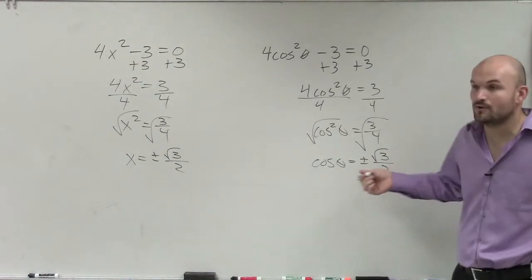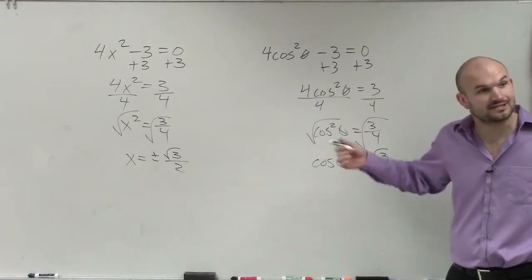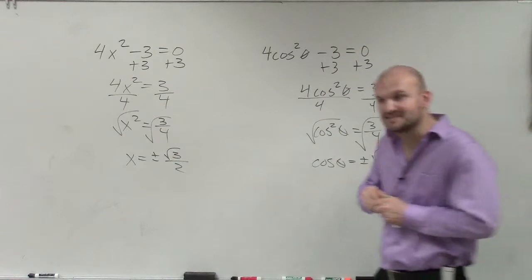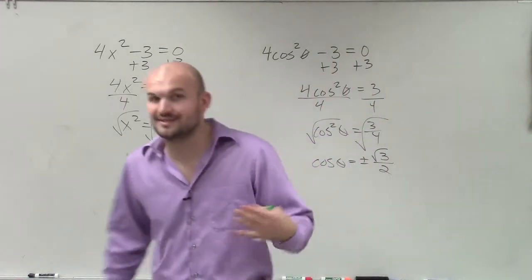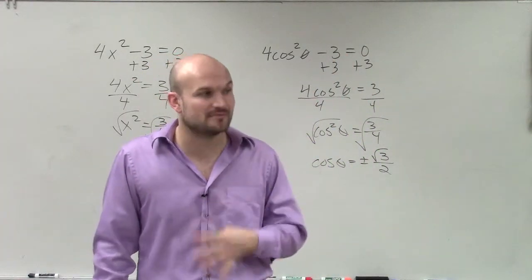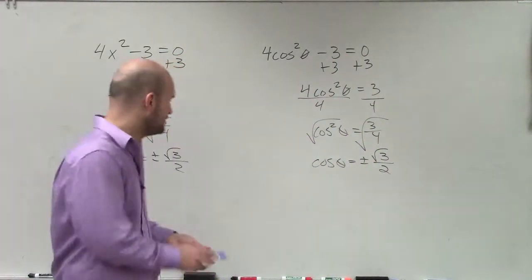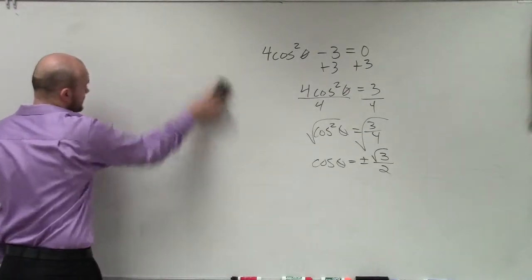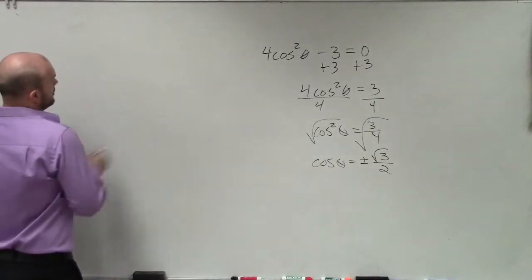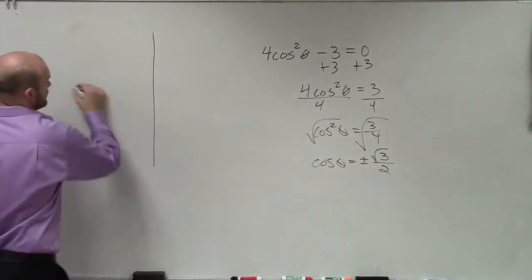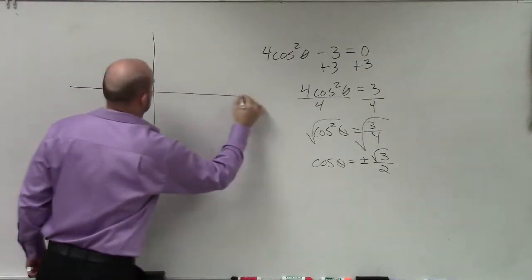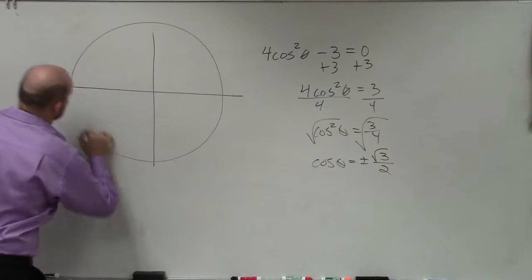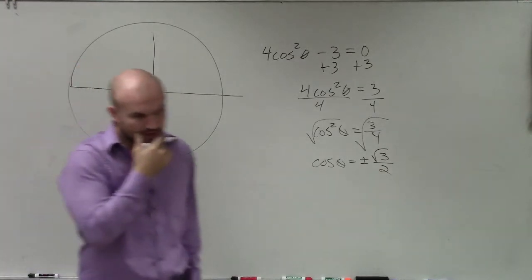All we did is find out what cosine of theta is going to equal for that equation. So now, as I mentioned, this unit circle thing is coming back. We've got to go back and remember our unit circle. I'll draw the whole unit circle because we're going to need it for this.